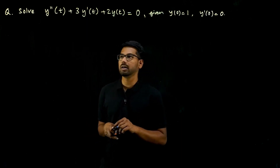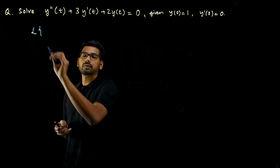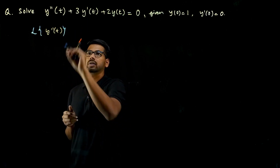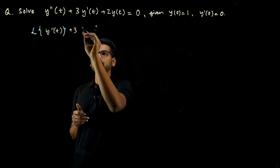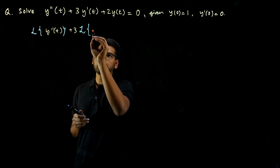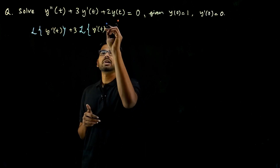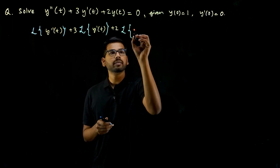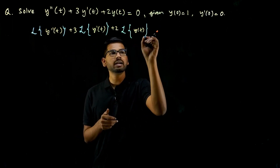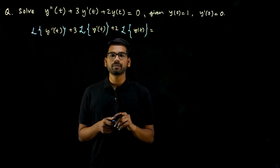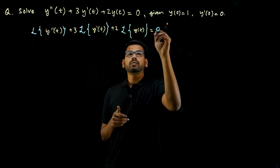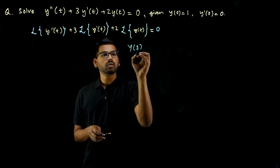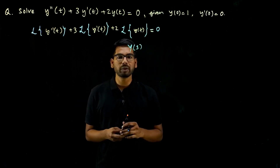First, let's take the Laplace transform of the given equation. So Laplace transform of Y double dash of t, plus three times Laplace transform of Y dash of t, plus two times Laplace transform of Y of t equals zero — since the Laplace transform of zero is zero. We know Laplace transform of Y(t) is Y(s): a time domain function Y(t) taken through Laplace transform becomes Y(s).